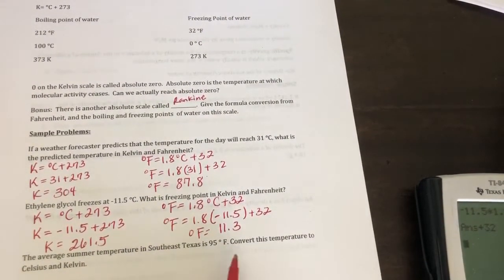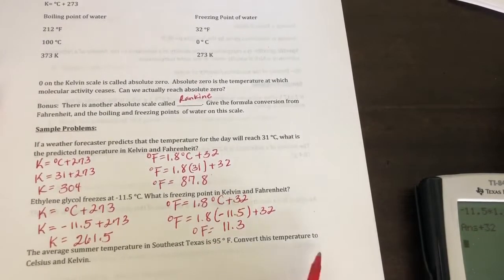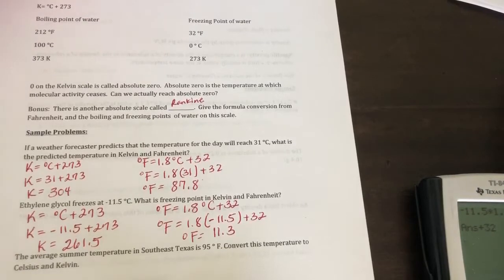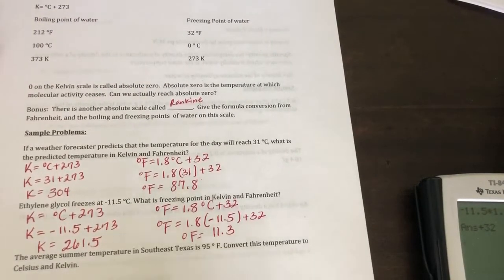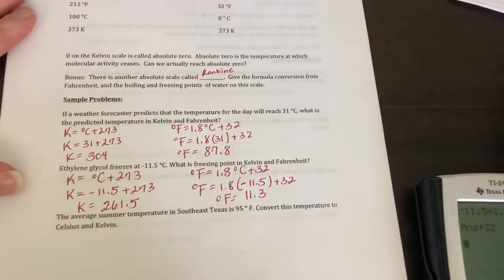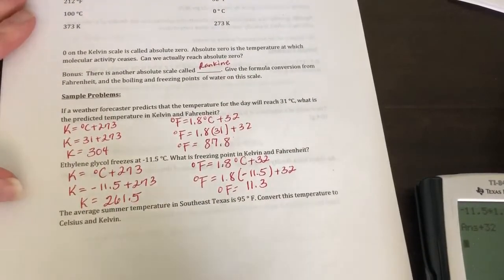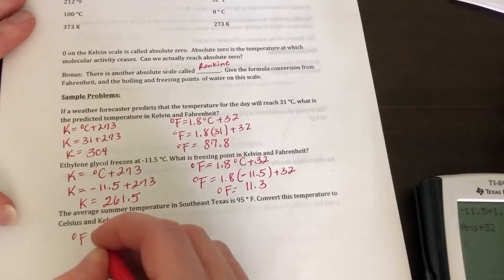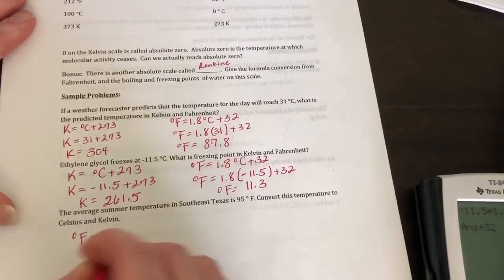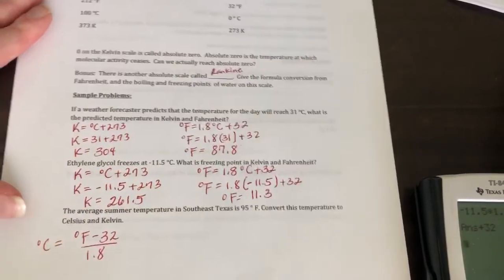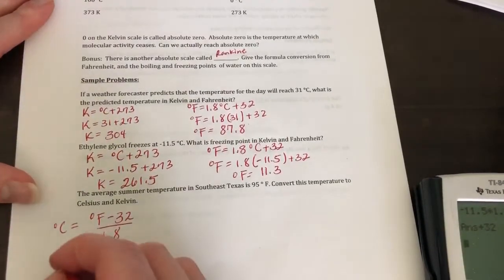So the average summer temperature in Southeast Texas is 95 degrees Fahrenheit. Convert this temperature to Celsius and Kelvin. Now, it's important to know that whenever you go from, when you go to Kelvin, you always have to go through degrees Celsius first. Okay, so degrees Fahrenheit minus 32 over 1.8. That's going to be your formula for degrees Celsius.